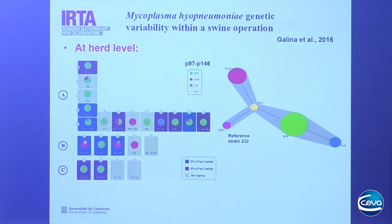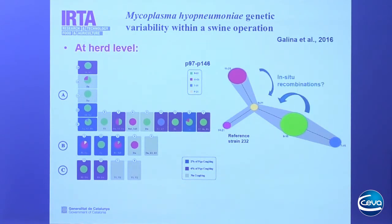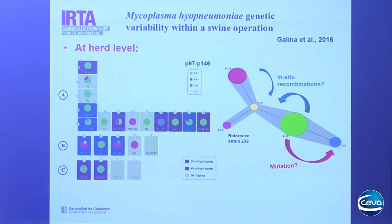However, this study was important because it provides evidence of possible in situ recombinations and mutations. A diagram shows the frequency of these four genotypes — the yellow genotype found only in room B1 appears to be derived from in situ recombinations of genotypes found in different rooms. This is the first evidence that in situ recombinations can happen. At the herd level, we can detect different genotypes without, at least in this study, any relationship with the presence of clinical signs.